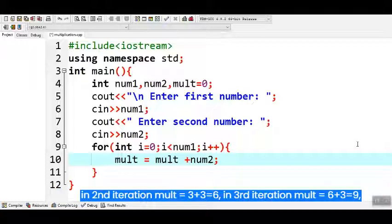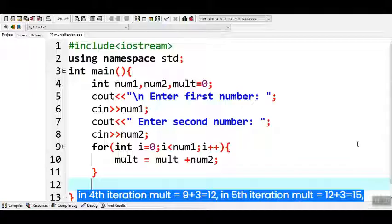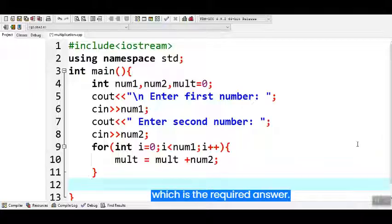In second iteration mult equals 3 plus 3 is equal to 6. In third iteration mult equals 6 plus 3 is equal to 9. In fourth iteration mult equals 9 plus 3 is equal to 12. In fifth iteration mult equals 12 plus 3 is equal to 15, which is the required answer.